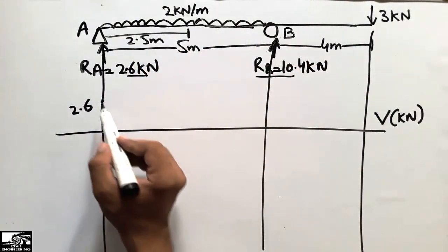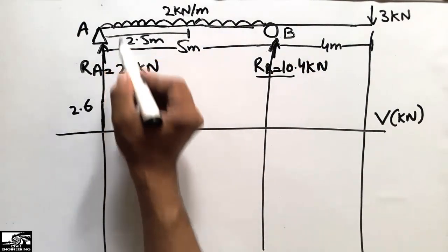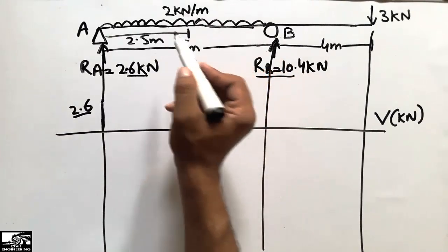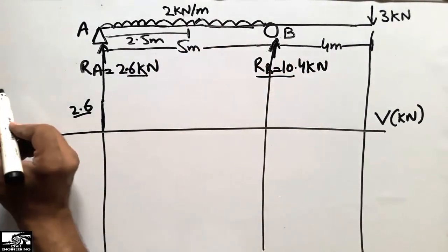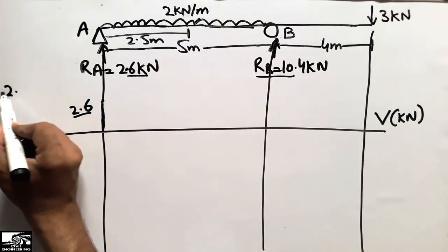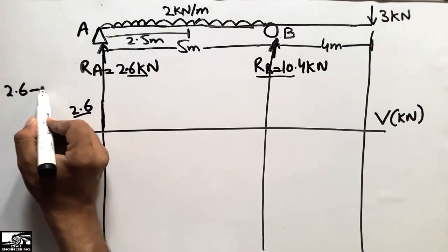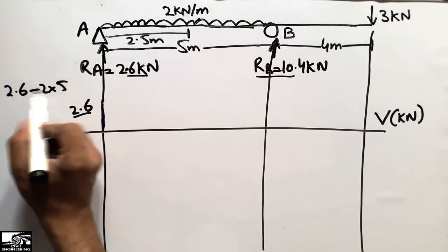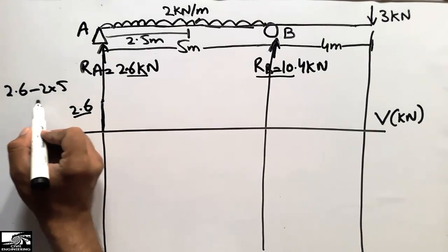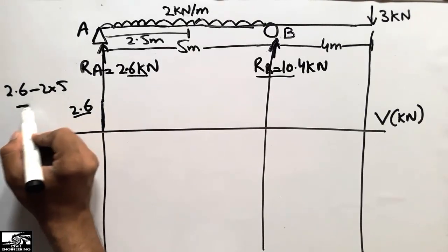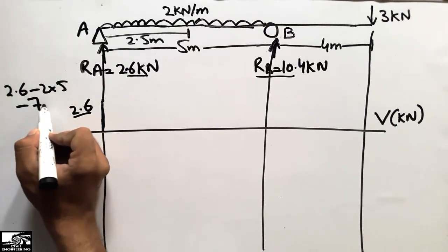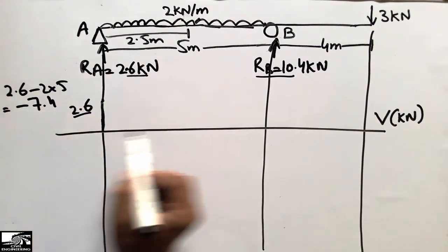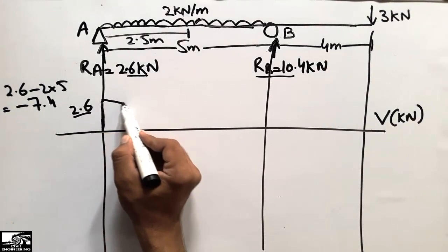The uniformly distributed load acts downward, so we subtract it from 2.6. We subtract two kilonewtons per meter over five meters: two into five equals ten. So 2.6 minus 10 gives minus 7.4 kilonewtons, meaning the shear force drops below the reference line to minus 7.4.